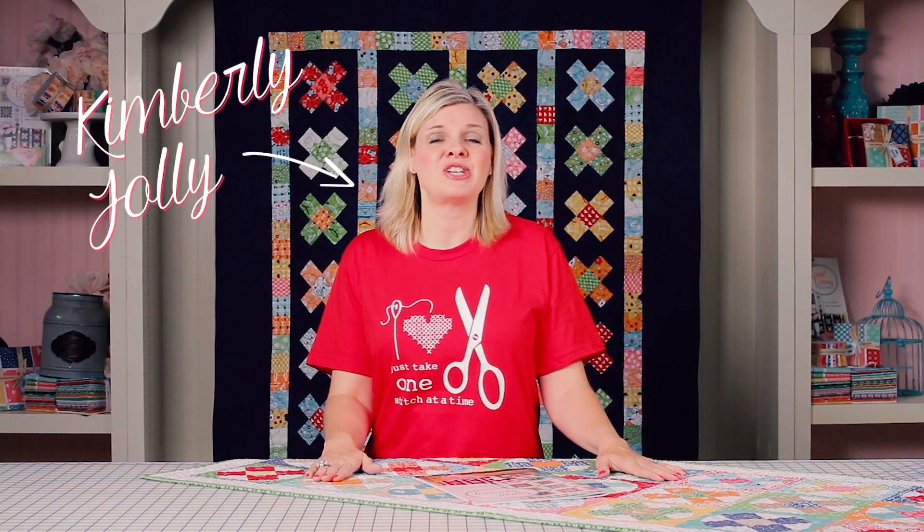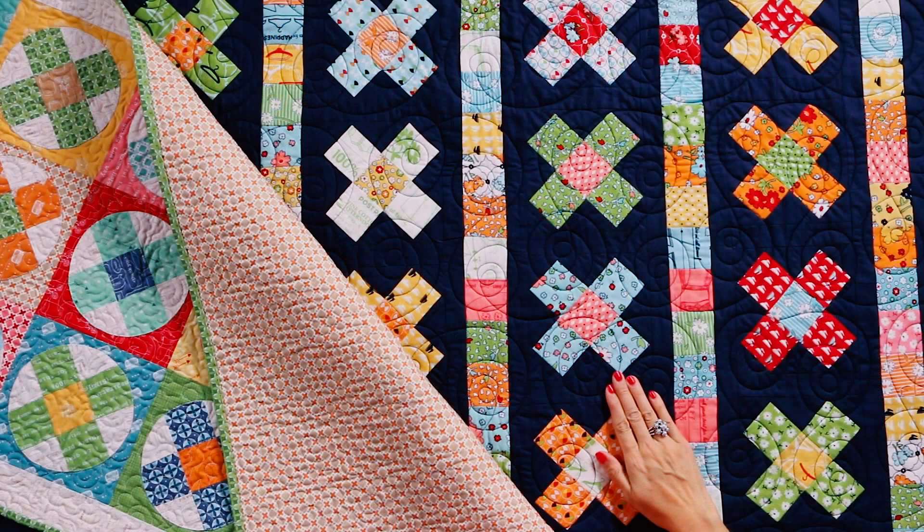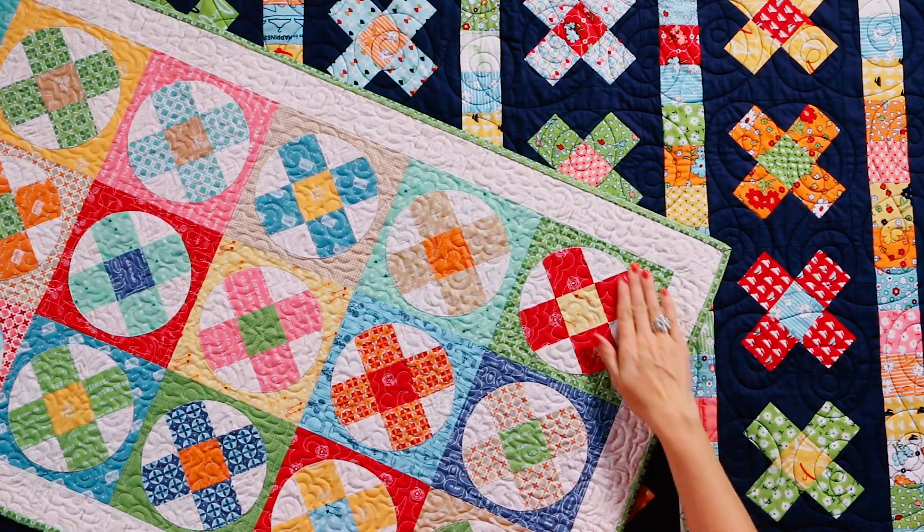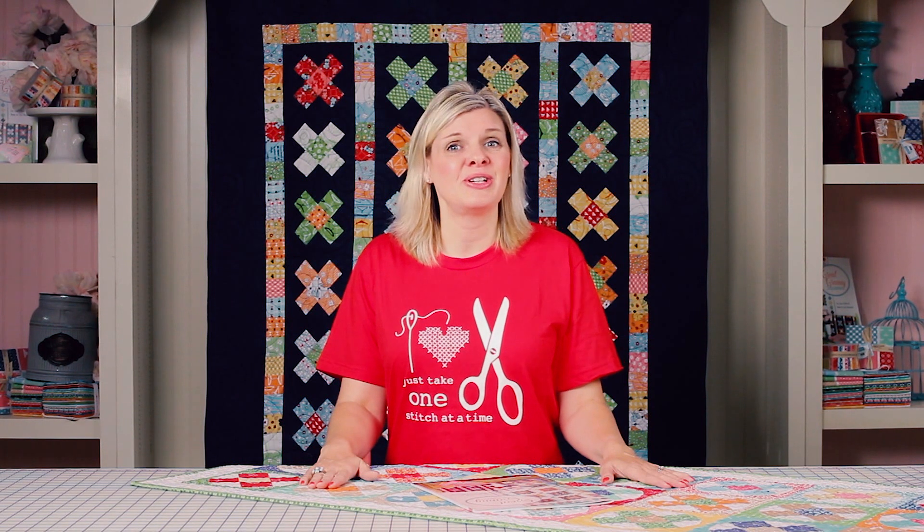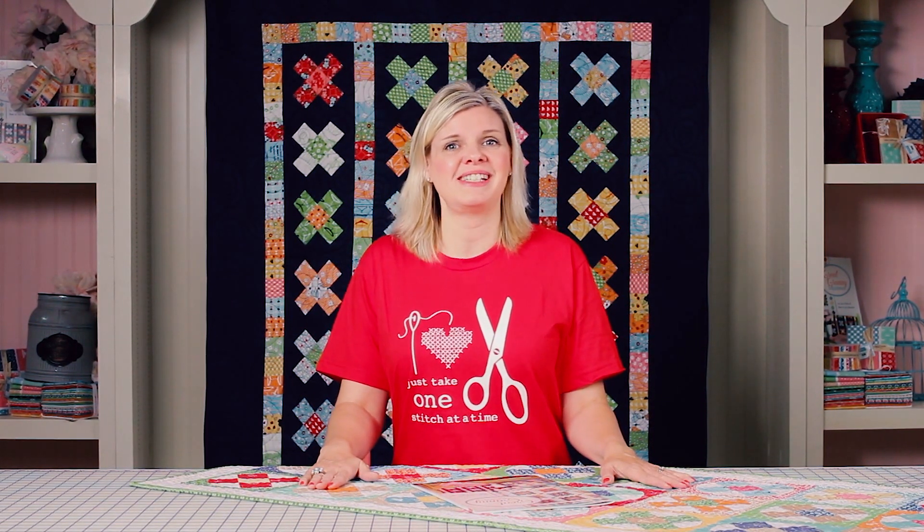Today we're celebrating Lori Holt's Great Granny Squared book, and we're changing things up by turning the mama block into an applique circle block. It's always fun to take an existing project and turn it on its head, and that's what we're going to be doing today.